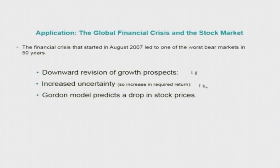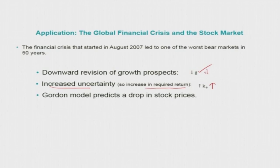Similarly, we can apply the same formula to the global financial crisis. During a crisis, the growth rate g declines, and the economic crisis also leads to high uncertainty in the economy, so the required return Ke increases. Because g is declining and Ke is increasing simultaneously, the Gordon formula shows that stock prices will decline. Thank you.